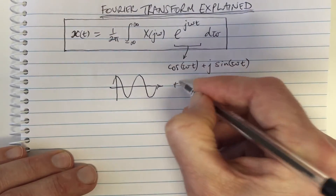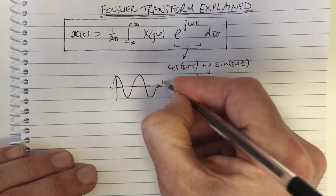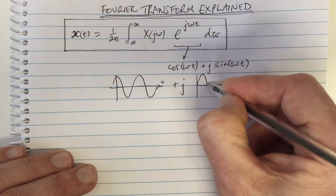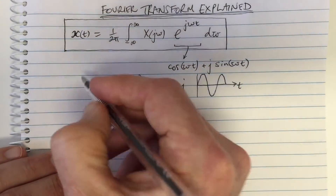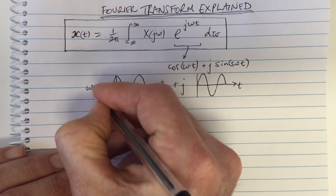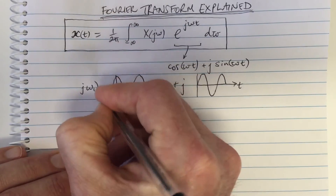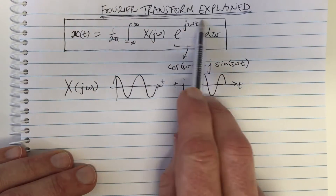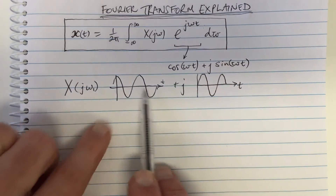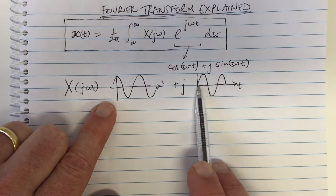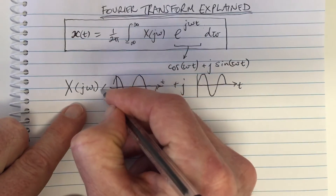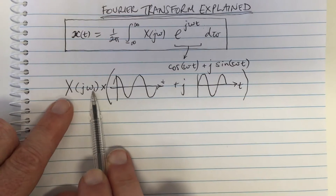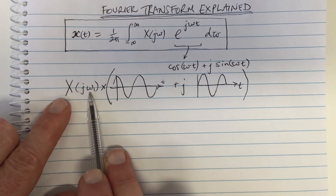Here is the cos waveform, plus j of the sine waveform — this is a function of time. They're at the same frequency, and let's say that this is ω₁. So this formula says: if we take one of these complex exponentials, which has a real part that looks like this (a function in time) and an imaginary part like this (a function in time), and we multiply it by this value — a numerical complex value at ω₁ —